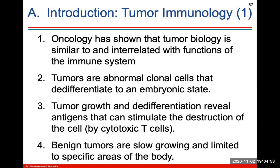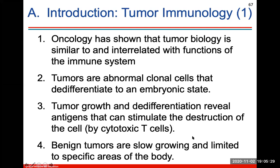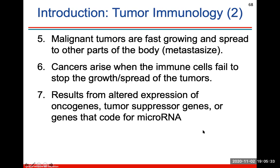Tumor immunology: oncology has shown that tumor biology is similar to and interrelated with functions of your immune system. Tumors are abnormal clonal cells that de-differentiate to an embryonic state. Tumor growth and de-differentiation reveals antigens that can stimulate destruction of the cell by cytotoxic T cells. Cancers will arise when immune cells fail to stop the growth or spread of tumors, resulting from altered expression of oncogenes, tumor suppressor genes, or genes that code for micro RNA.